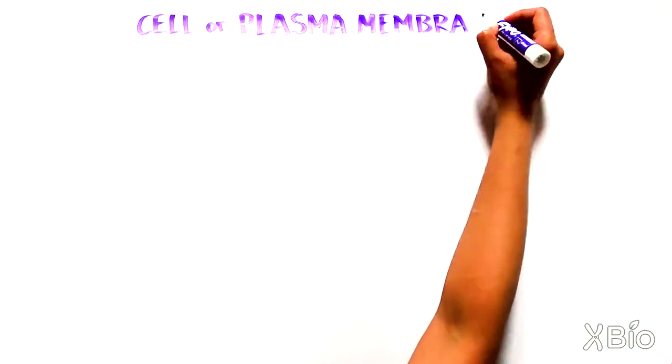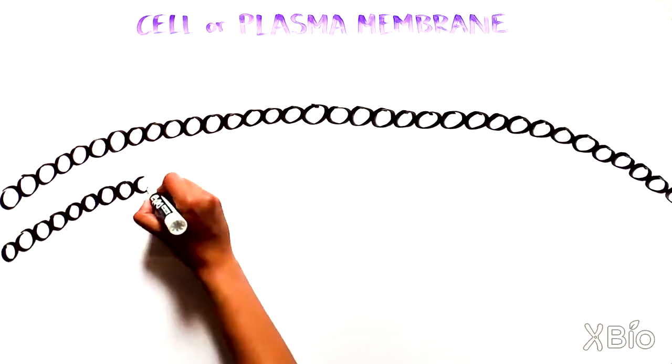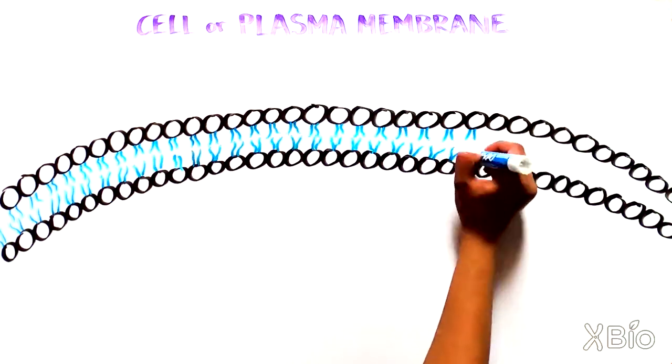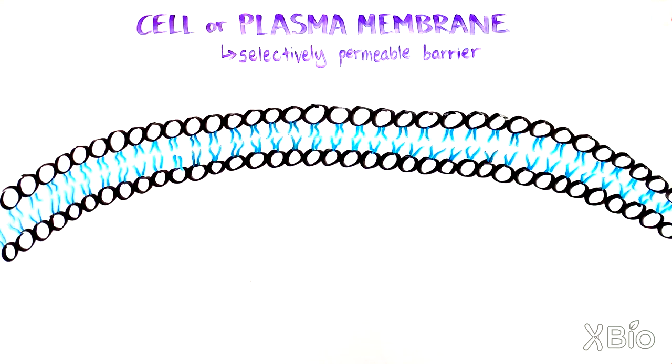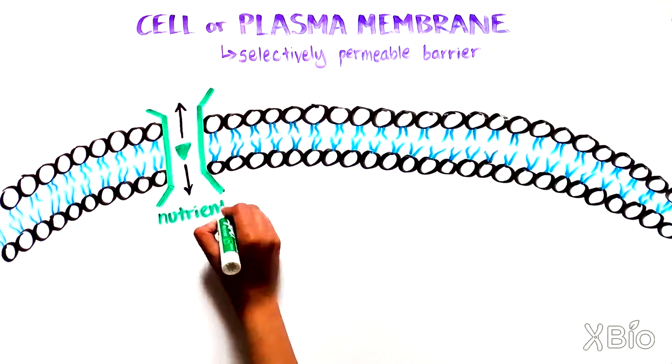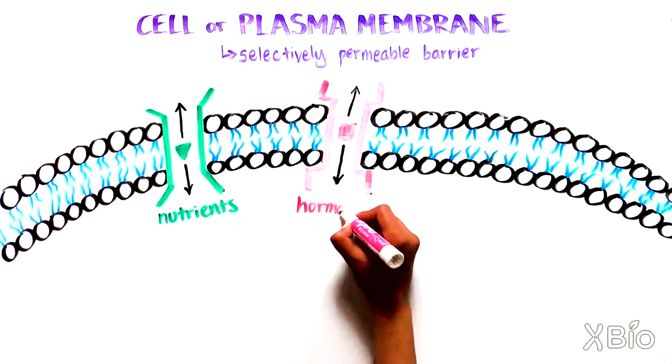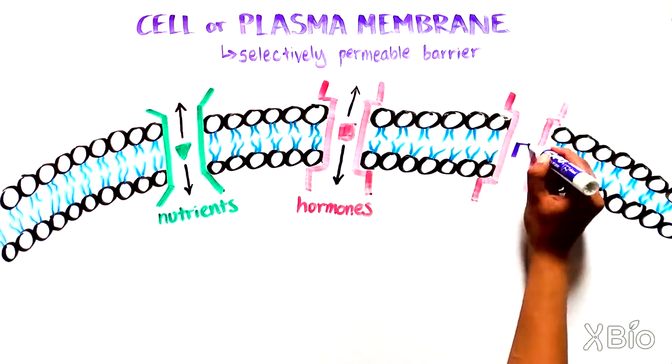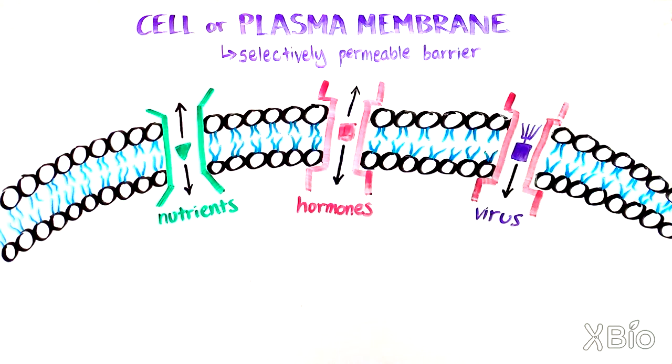Similarly, the plasma membrane, which is made up of lipids and proteins, is a selectively permeable barrier that allows only certain molecules to come in or leave. This usually means good things like nutrients and hormones, although sometimes viruses can trick the cells and enter by similar mechanisms.